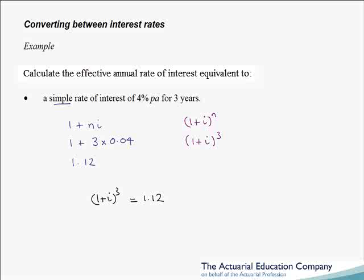Before we calculate the answer it's useful to have a feel for the numbers. Will the compound or effective rate be bigger or smaller than the simple rate of 4% to get the same accumulation? It will be smaller, since effective interest earns interest on the interest, so we need a smaller rate to get the same accumulation. Cube rooting both sides: 1 + i = 1.12^(1/3), so i = 1.12^(1/3) − 1 = 0.0385, that is 3.85% per annum.